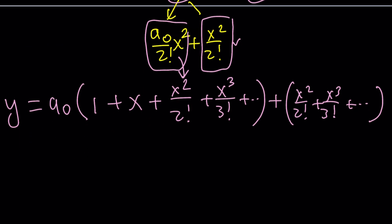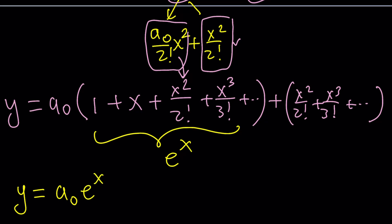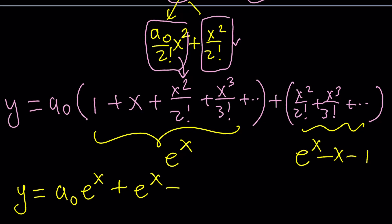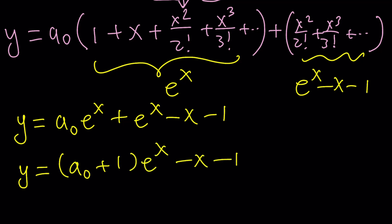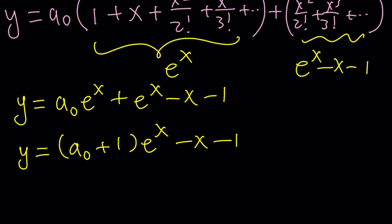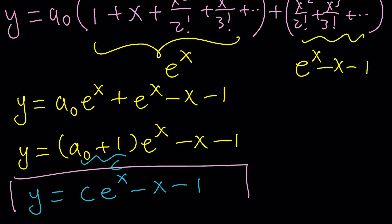This is amazing: the first piece inside the parentheses is exactly the power series for e to the x. The second piece is also e to the x, except it's missing the 1 and the x terms, so it's e to the x minus x minus 1. Combining, we get y equals a sub 0 times e to the x plus (e to the x minus x minus 1). Rewriting as y equals (a sub 0 plus 1) times e to the x minus x minus 1. Calling that constant c, we get y equals c times e to the x minus x minus 1. The second method will verify this.